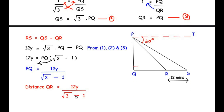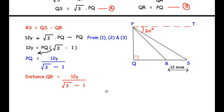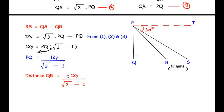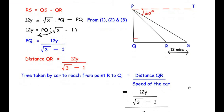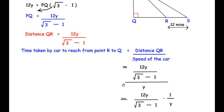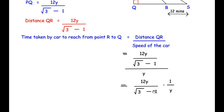Rationalizing: time = 12(√3 + 1) / [(√3 − 1)(√3 + 1)]. Using the identity (a+b)(a−b) = a² − b², the denominator becomes √3² − 1² = 3 − 1 = 2. So time = 12(√3 + 1) / 2 = 6(√3 + 1). Substituting √3 = 1.73, we get 6 × (1.73 + 1) = 6 × 2.73 = 16.38 minutes, which rounds to approximately 16 minutes.